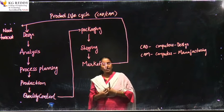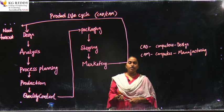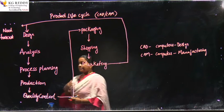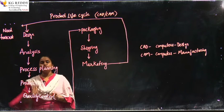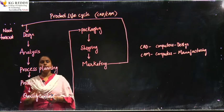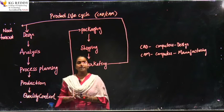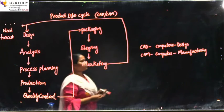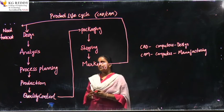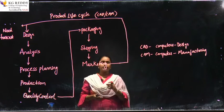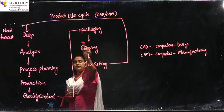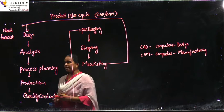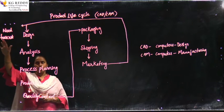As engineers, we should know how a product is manufactured and how it comes into the market. The basic first step is to think about whether the product we bring to market is useful to people or not. Based on the necessity of people, we analyze whether that particular product is necessary for human beings — this is called need forecast. Coming to product life cycle, it means the journey from raw material to the final stage where customers receive the product.